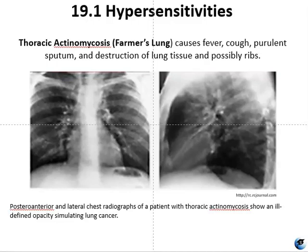Type 3 hypersensitivities can affect the lung, causing a form of pneumonia called hypersensitivity pneumonitis. Individuals become sensitized when minute mold spores or other antigens are inhaled deep into the lungs, stimulating antibody production. A hypersensitive reaction occurs when subsequent inhalation of the same antigen stimulates immune complex formation, activating complement. One form, called farmer's lung, occurs in farmers chronically exposed to spores from moldy hay. It can lead to lung cancer in more severe cases, as well as fever, cough, and destruction of lung tissue, and in some cases even destruction of part of the ribs.